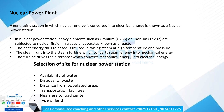The steam runs into the steam turbine. We convert the steam energy into mechanical energy. We use uranium and thorium; nuclear fission releases heat energy, which is converted to steam, and the steam turbine converts that into mechanical energy. This is how the nuclear power plant works.